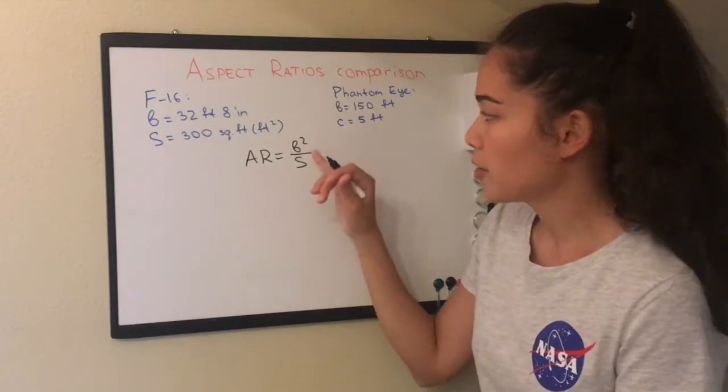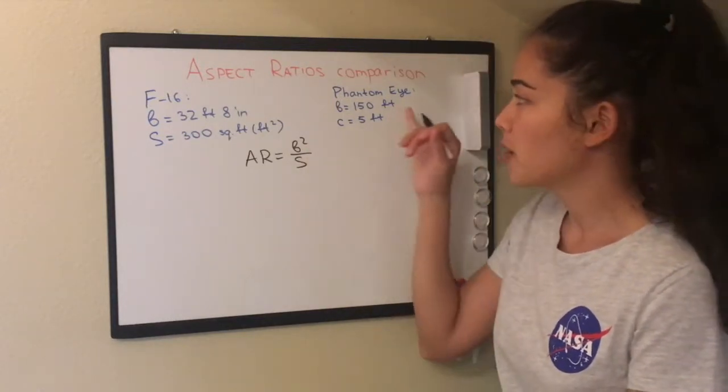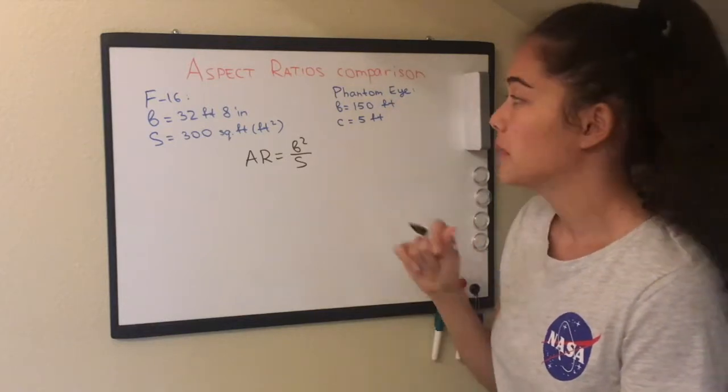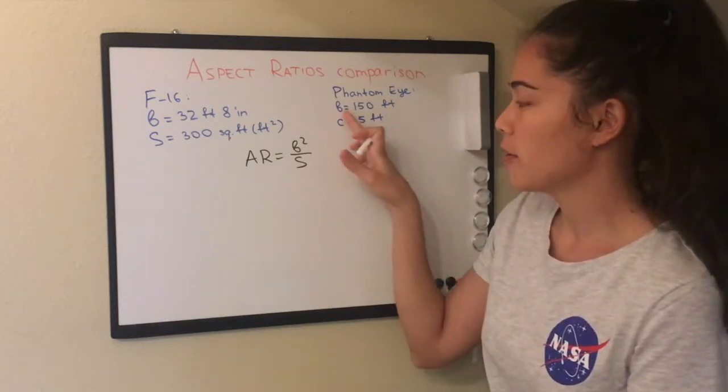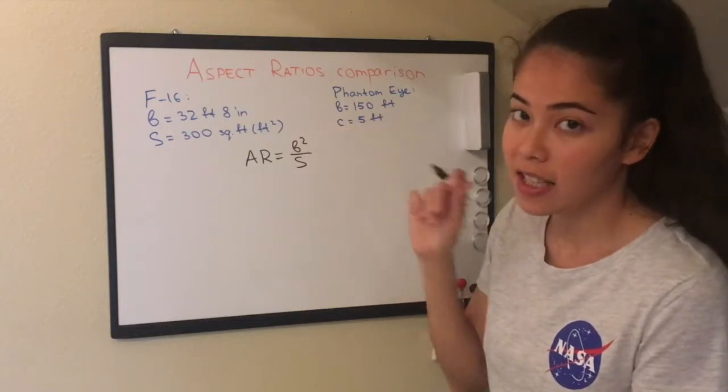So for F-16 we know the wingspan and the wing area. But do we know it for Phantom Eye? Not necessarily. We know the wingspan but we don't know the area yet, which we can calculate easily.